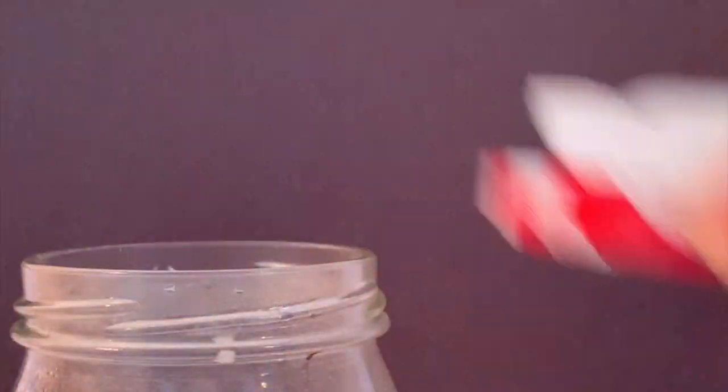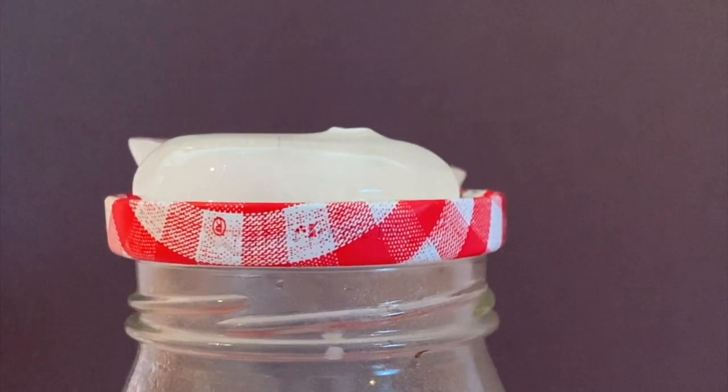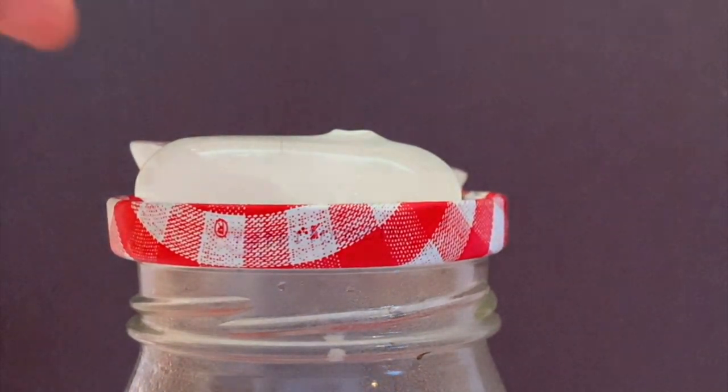First heat up the jar in a microwave for around a minute. Use oven mitts and place it down. Immediately put the cap with the ice on top to trap the steam inside.